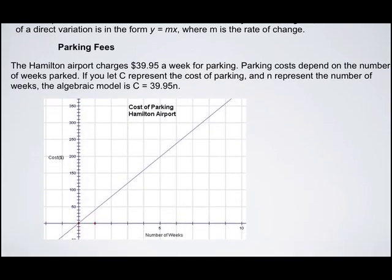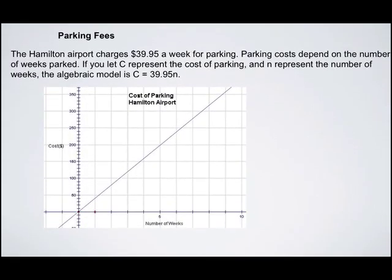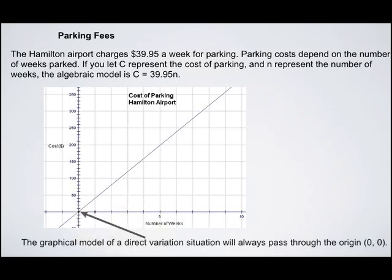A graph of this is shown below. Because parking cost depends on the number of weeks parked, the number of weeks is along the independent axis, and the cost is along the dependent axis. This situation varies directly. It's indicated by the fact that it goes directly through the origin. The graphical model of a direct variation situation will always pass through the origin, zero zero.